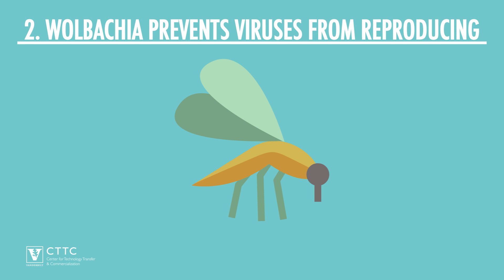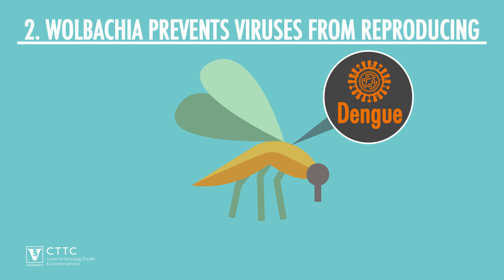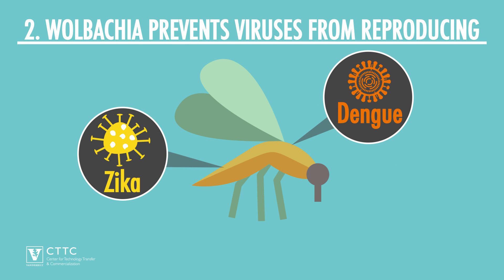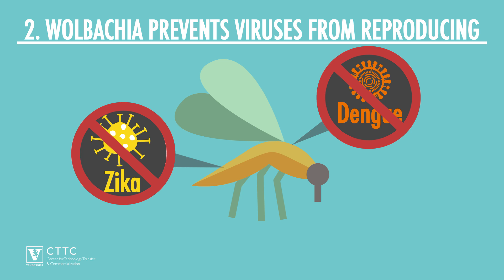Two, Wolbachia prevents human disease viruses like dengue and Zika from reproducing inside their mosquito hosts and prevents mosquitoes from spreading them to humans when they bite.